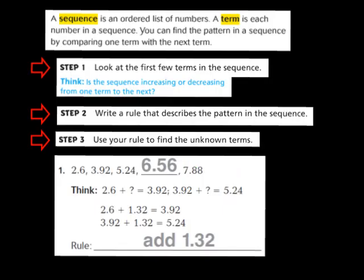We're going to start out by taking a look at question number 1. Question number 1 has already been completed for us, but it's a good model for how to solve problems involving patterns with decimals. Before we begin, I want to talk about some vocab words. The first word is sequence — a sequence is an ordered list of numbers. The second vocab word is term — each number in a sequence is a term. You can find the pattern in a sequence by comparing one term with the next term.